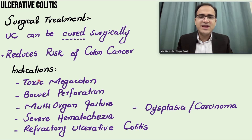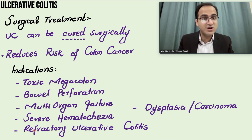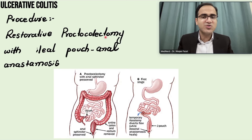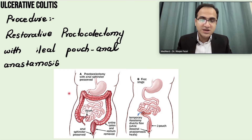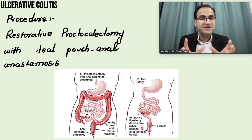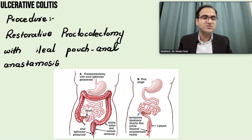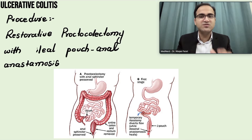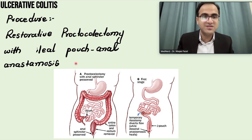Indications for surgery include toxic megacolon, bowel perforation, multi-organ failure, severe hematochezia, refractory ulcerative colitis, and dysplasia or carcinoma. Restorative proctocolectomy is performed: the colon is removed from the cecum to the anal canal. Then a loop of ileum is fashioned into a rectal pouch and anastomosed with the anal canal and sphincter — this is called ileal pouch-anal anastomosis (IPAA), which acts as a rectum to store feces.